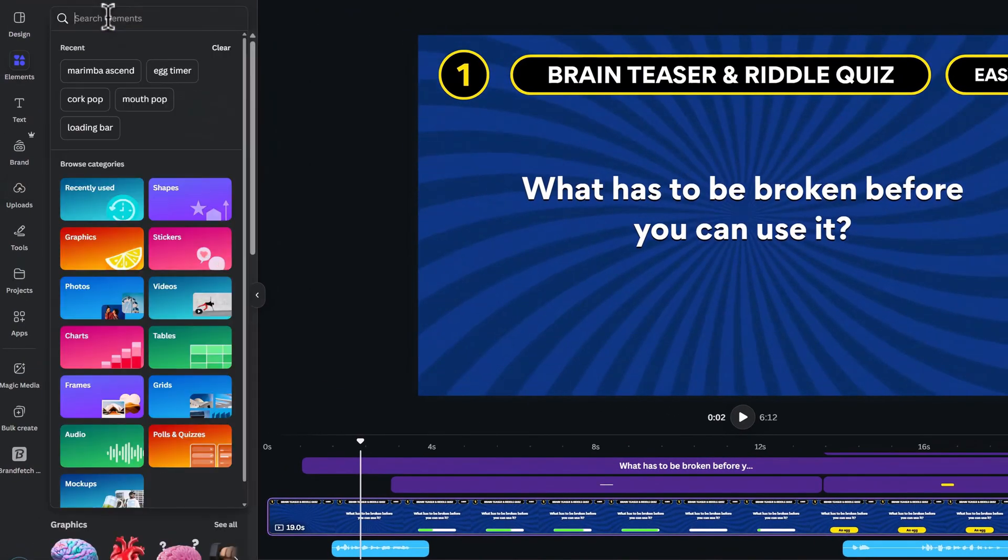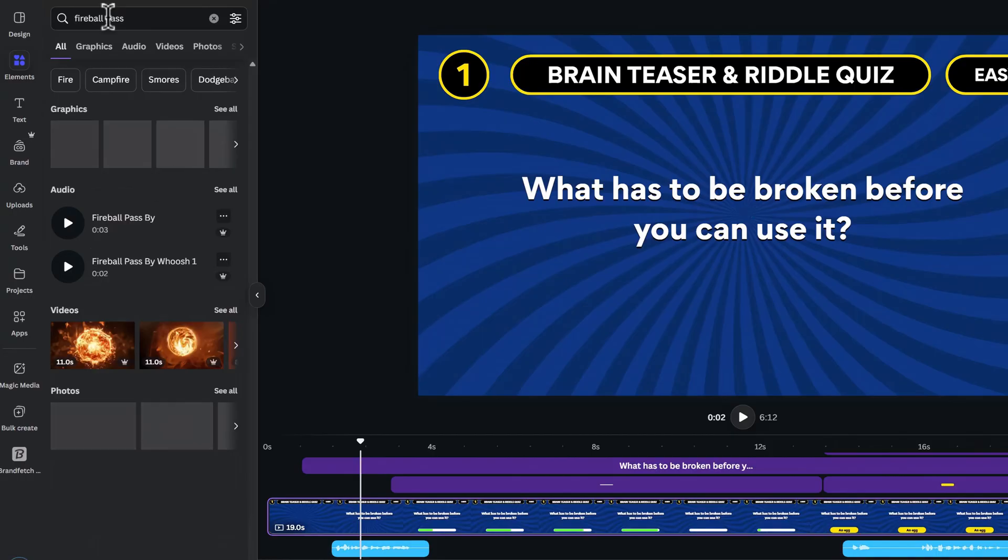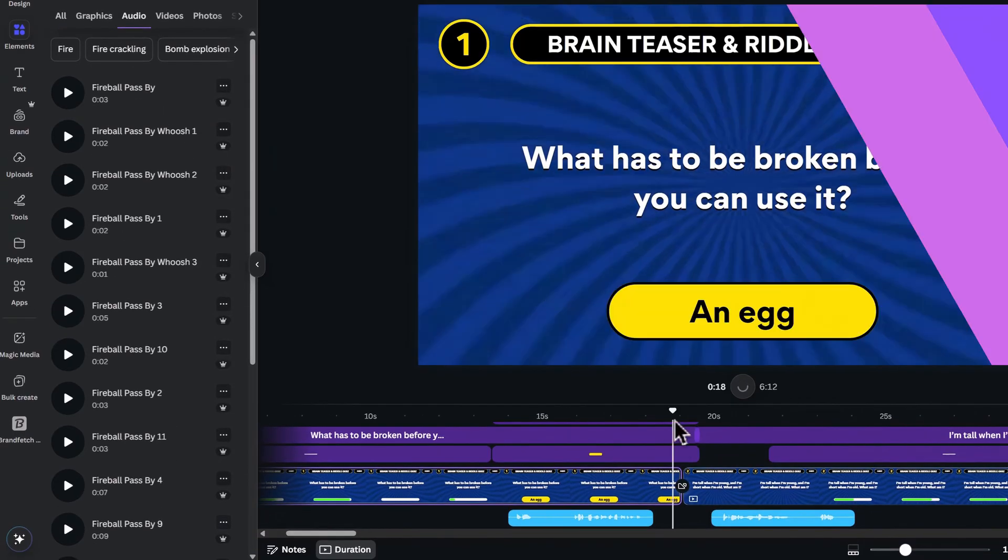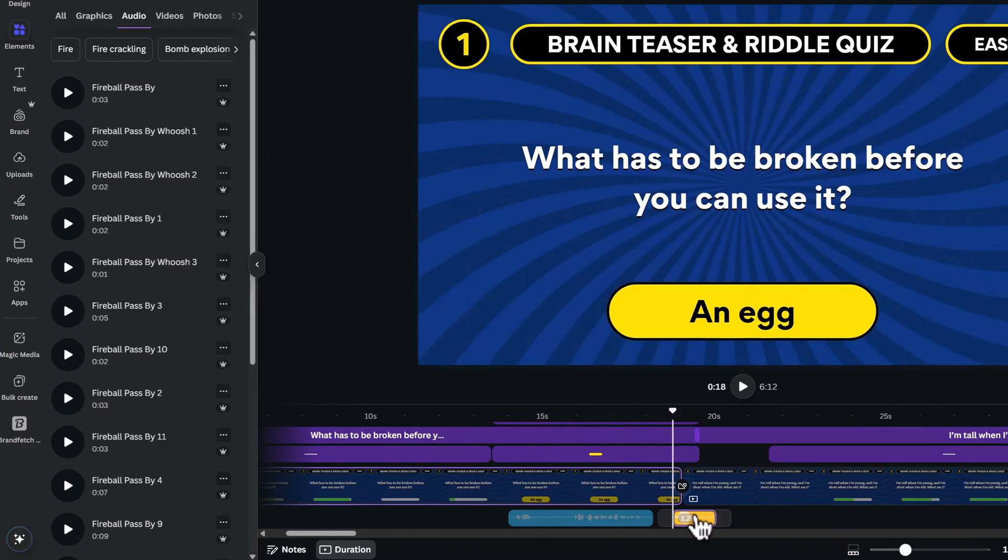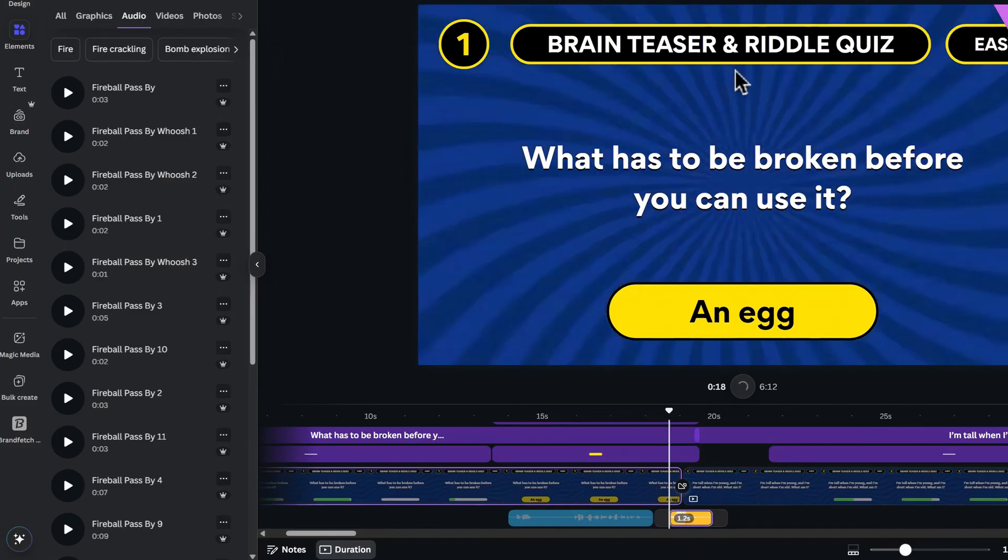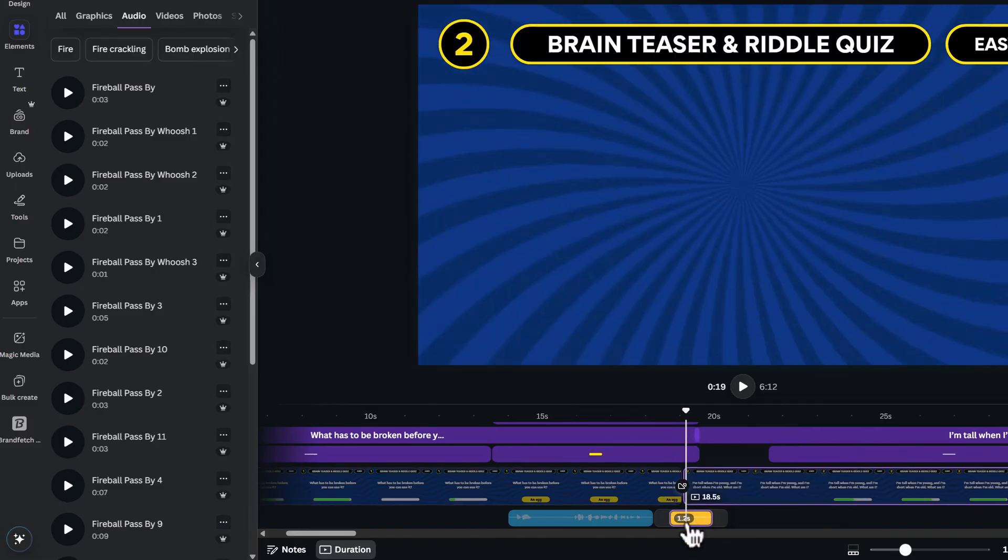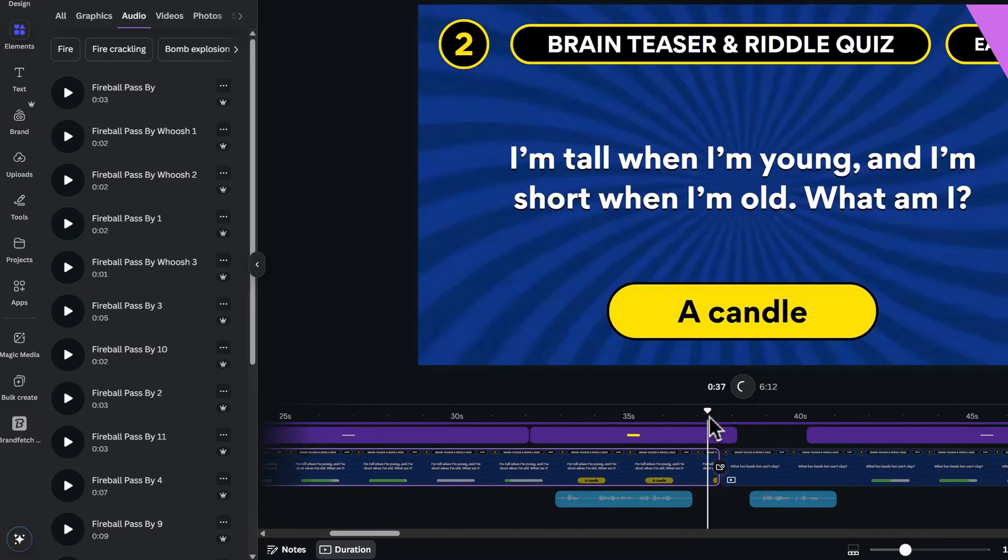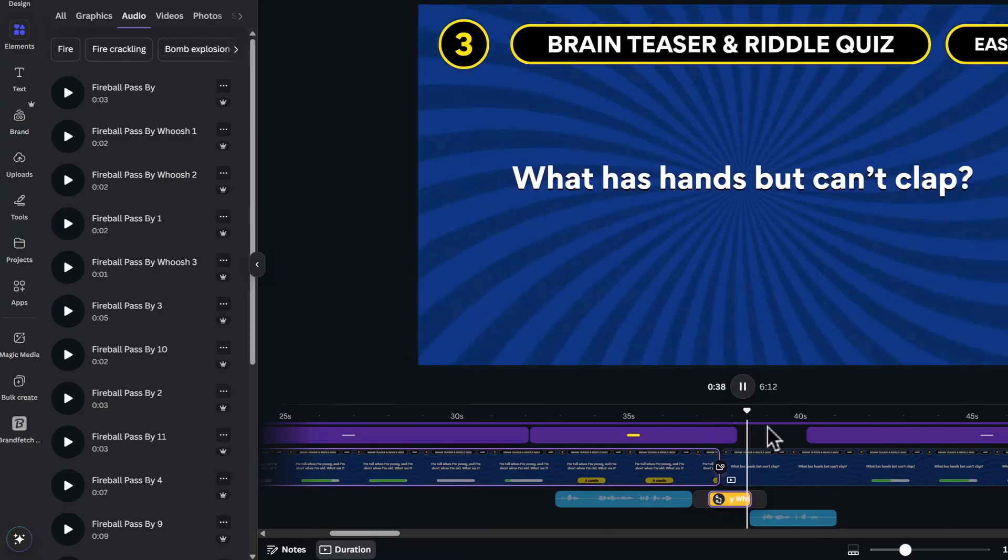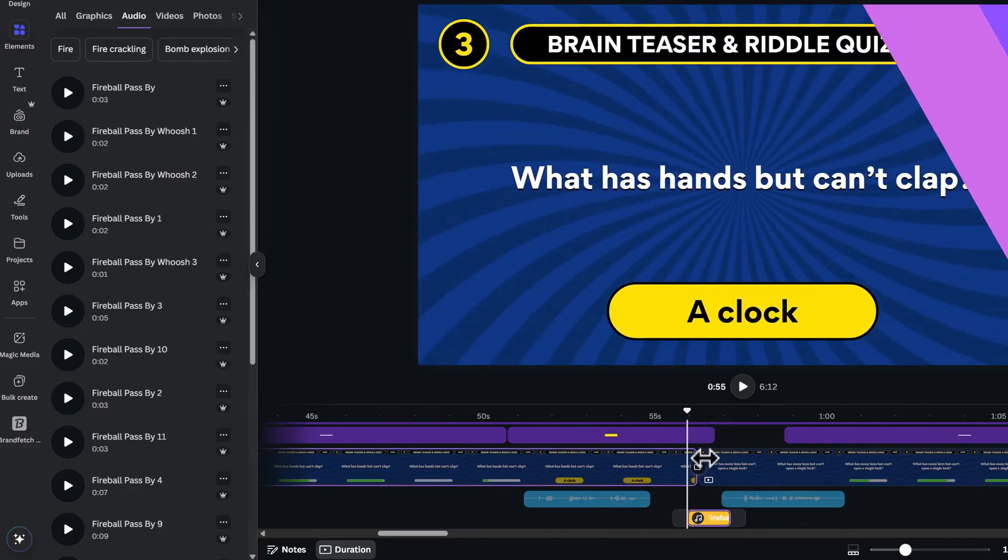To spice it up a bit, you can search for Fireball Pass on the Audio tab for the transitions. Go to the end of the first scene, click on it for the playhead to appear. Then click on Fireball Pass by Woosh 3. Reduce the volume to 20 at the top. Then right-click to copy it. Go to the end of scene 2 and paste it there. Repeat the same for scene 3 as well as others till the end.